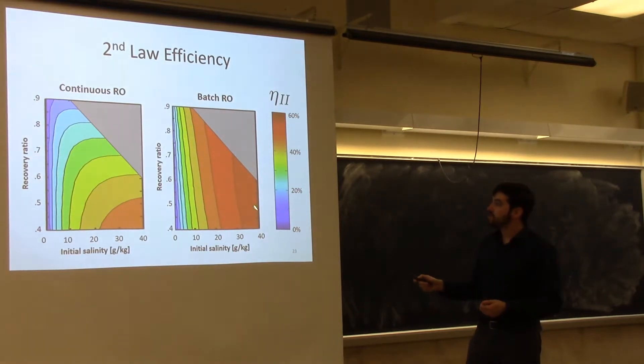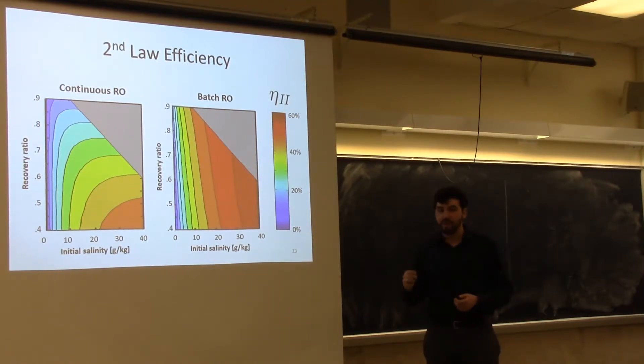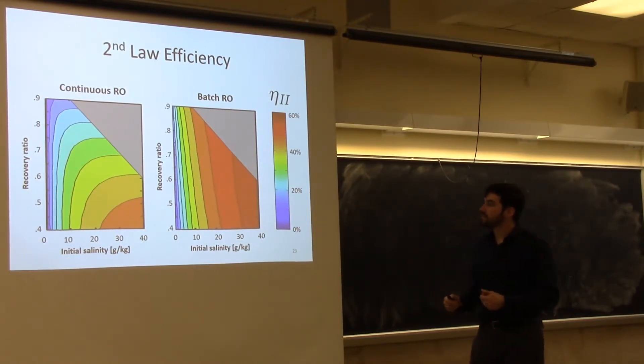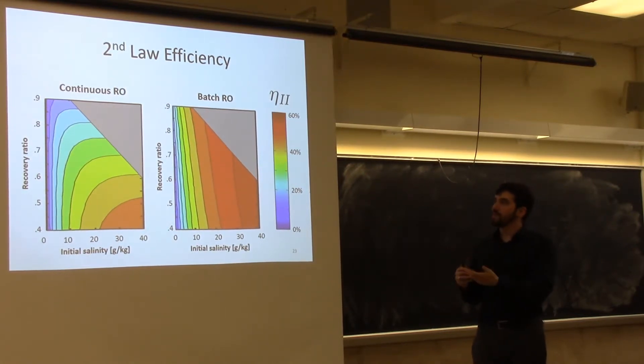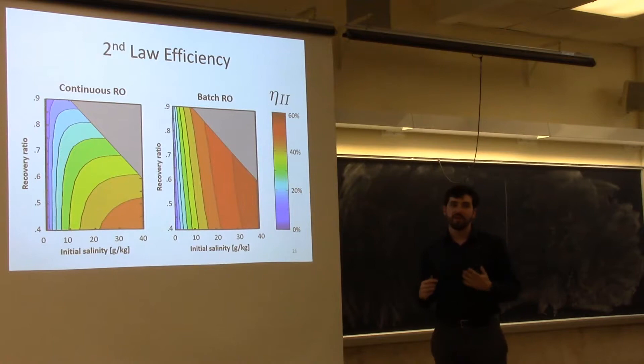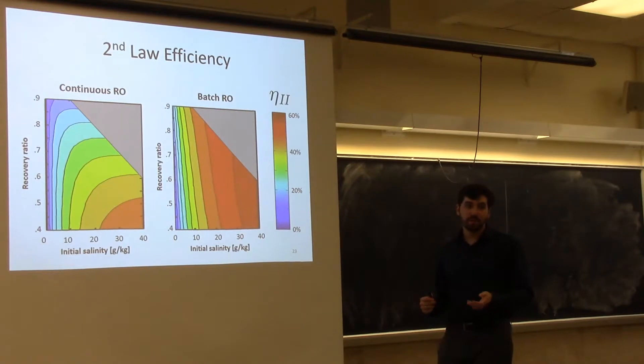At these predicted recovery ratios, our energy efficiencies are close to 60%. This is still assuming fairly inefficient pumps, around 70% efficiency. We're seeing that we can really get very close to theoretical maximum efficiencies. The most efficient pumps in the market are over 90% efficient.